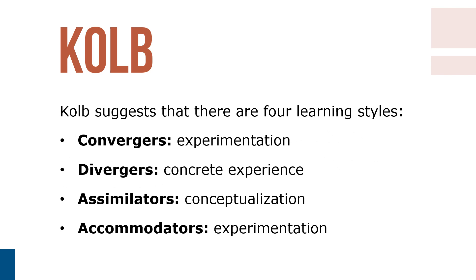Kolb suggests that there are four basic learning styles. Convergers depend primarily on active experimentation and abstract conceptualization to learn. Divergers depend primarily on concrete experience and reflective observation. Assimilators depend on abstract conceptualization and reflective observation. And accommodators rely mainly on active experimentation and concrete experience, and focus on risk-taking, opportunity-seeking, and action.